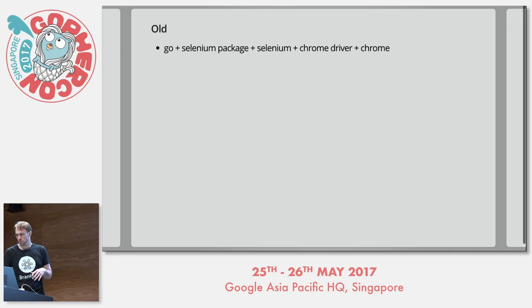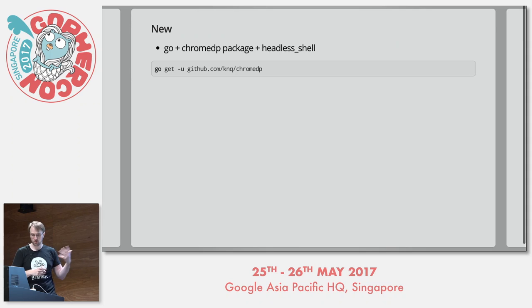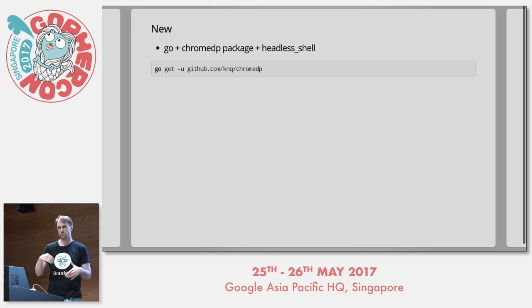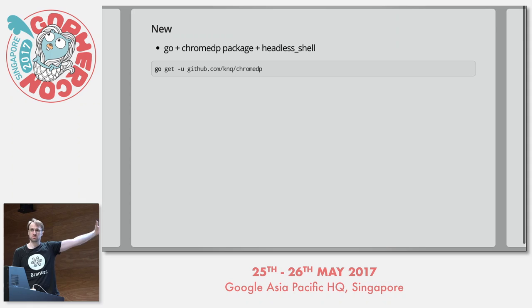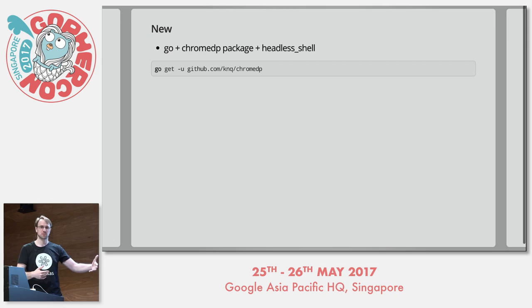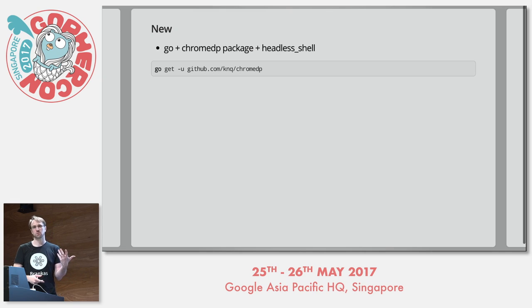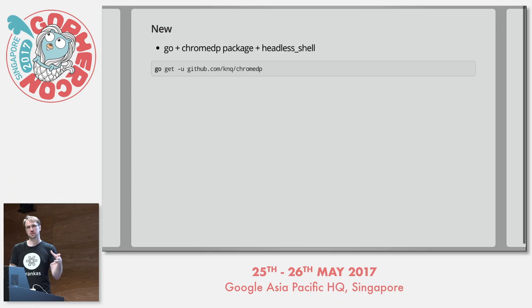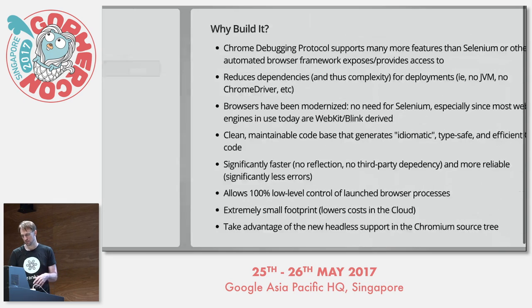The new model we have now is just Go plus ChromeDP and Headless Shell. ChromeDP was written to take advantage of the new headless aspects in the Chromium source tree. While there's no direct static ability to embed Headless Shell today, we are working on embedding it completely via a Go-gettable package. That may not ever work for anything other than Linux, but we're aiming to eventually have a pre-compiled version of Headless Shell integrated and directly usable.